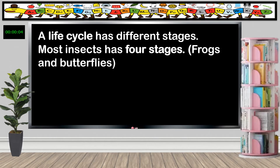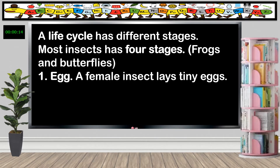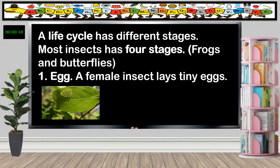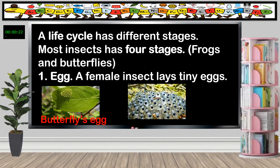Most insects have four stages. In this lesson, let us look at the life cycle stages of the frog and the butterfly. The first stage is the egg, in which a female insect lays tiny eggs. These are butterfly eggs, and these are frog eggs.